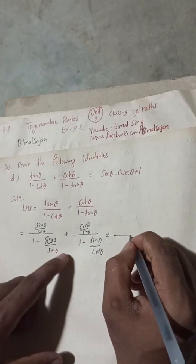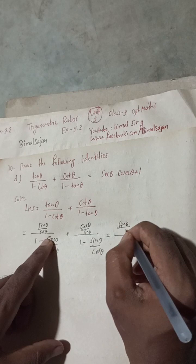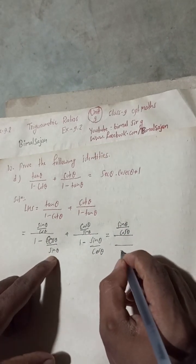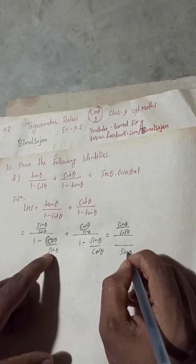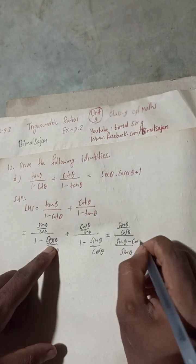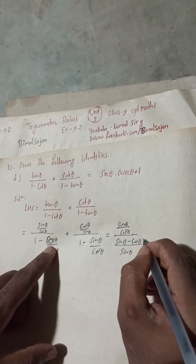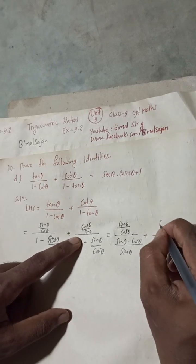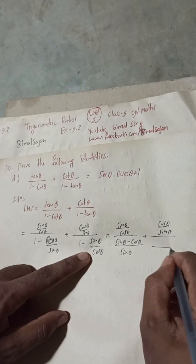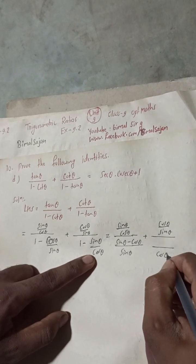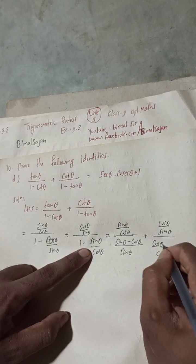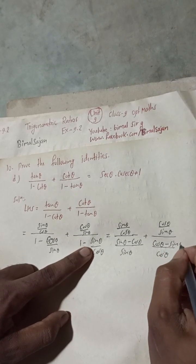Here this is sin θ / cos θ as it is, and this sin θ — this will be written and multiplied, meaning sin θ minus cos θ. Plus here cos θ / sin θ as it is, and now at the denominator, this 1 times this gives cos θ minus sin θ.